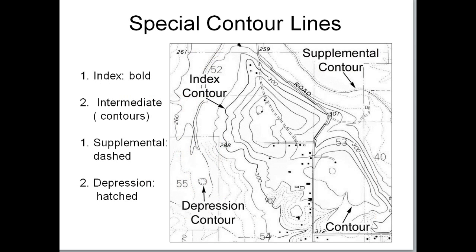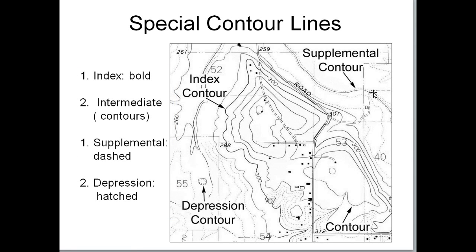There are several special kinds of contour lines you need to identify. The index line is the bold line that often has the elevation value — for example, a 300-foot darker line is the index line. The other contour lines in between are called intermediate lines. Often the index line is a darker brown thicker line, and the intermediate lines are lighter brown. You can also find supplemental contour lines shown as dashed lines, with the contour interval and supplemental interval noted at the bottom of the map.